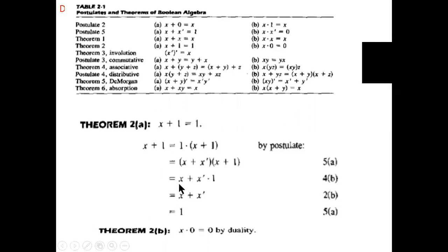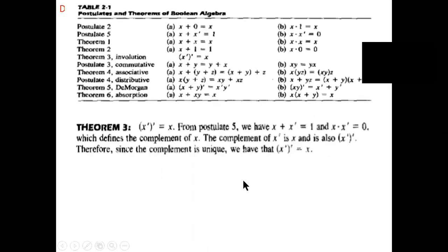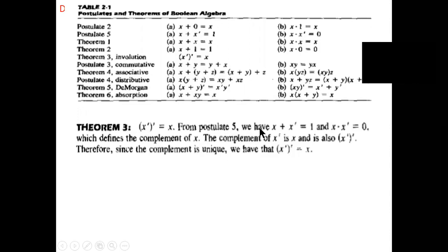So this is how we prove x plus 1 equal to 1. Then the next theorem: x double-complement (x'') whole dash. Using postulate φa, we have x plus x' equal to 1 and x dot x' equal to 1. So here it means we already proved that x'' equals x using postulate φa.